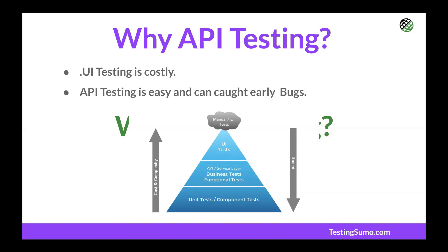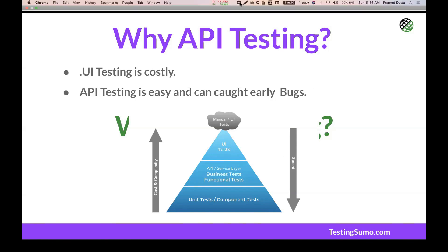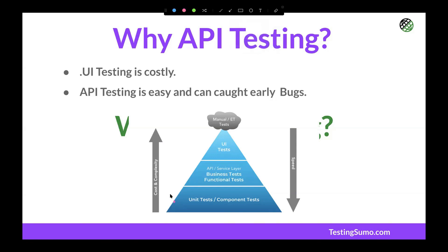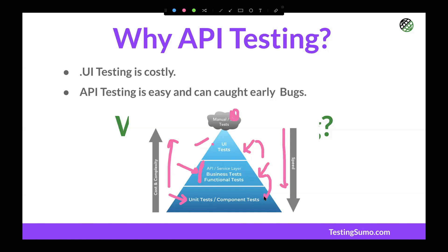Looking at the cost and complexity graph: unit tests written by developers are very cheap; API layer testing is in the middle between UI and unit tests — a good place to test. UI test cases are very slow and costly. APIs are faster than UI but unit tests are the fastest. However, developers are often not writing unit test cases in practice.